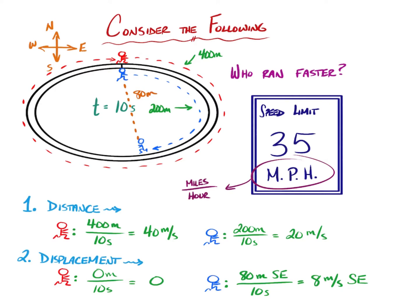However, I'll assume that that straight line distance between the blue runner's start and end position is 80 meters as I've drawn on that track. If we assume that that's about 80 meters straight line,